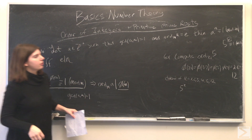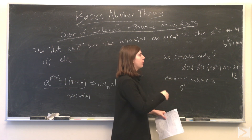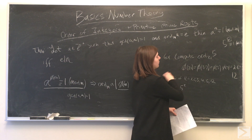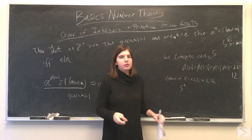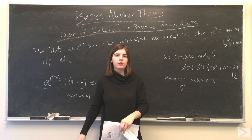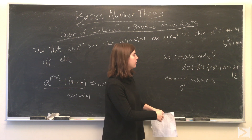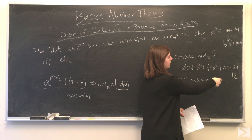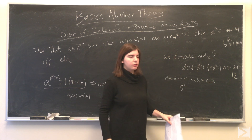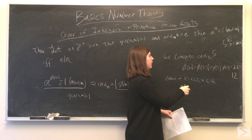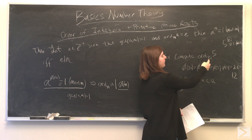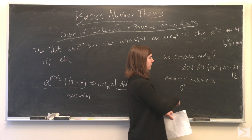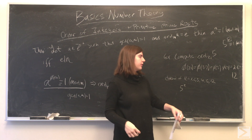We'll do an example. If we're asked to compute the order of 5 modulo 21, we can find phi of 21. If you're not sure how to do that, check out our other video on Euler's theorem and the phi function. Phi of 21 equals phi of 3 times phi of 7, which is 2 times 6, which is 12. So the only possible values for the order of 5 modulo 21 must be divisors of 12: 1, 2, 3, 4, 6, and 12.